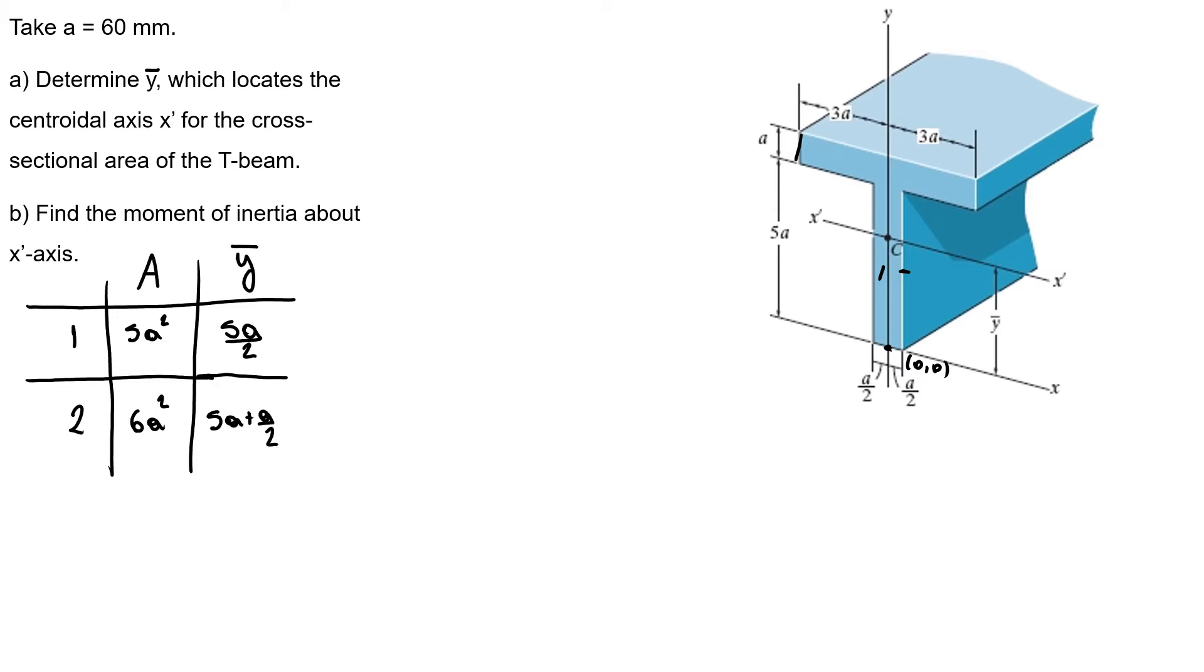In order to calculate our y-bar, the sum of the areas times y-bar of my piece equals a1 times y-bar 1 plus a2 times y-bar 2. So my y-bar will be 5a square times 5a over 2 plus 6a square times 5.5a, divided by 5a square plus 6a square.